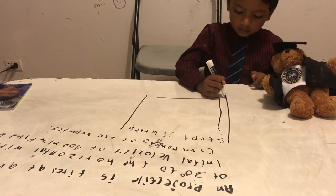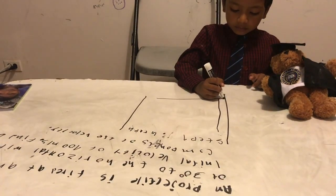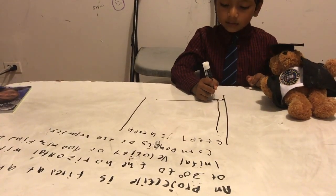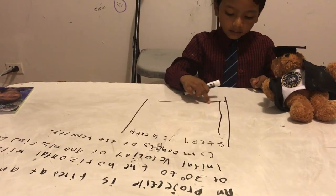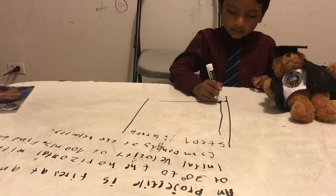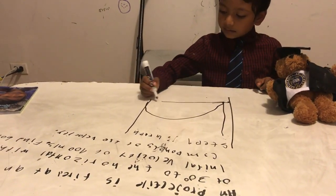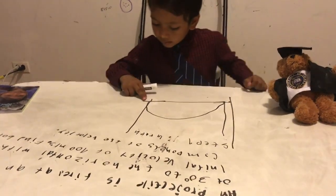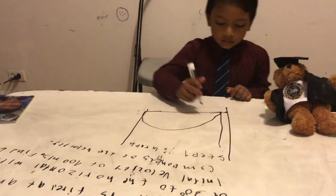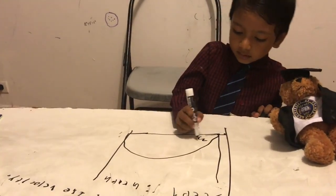And remember, the projectile will come down like this parabola. And that is 30 degrees.